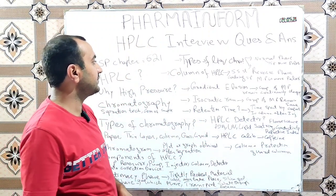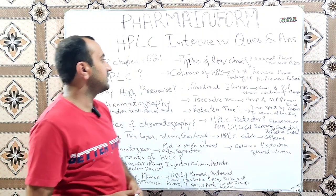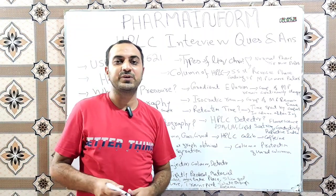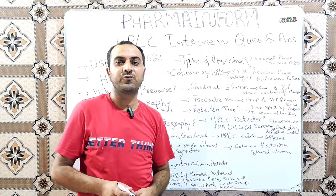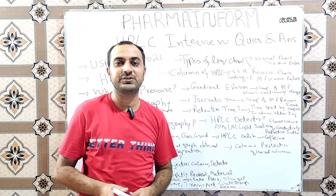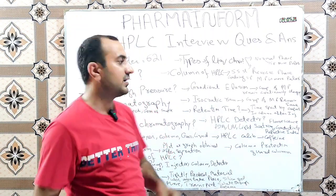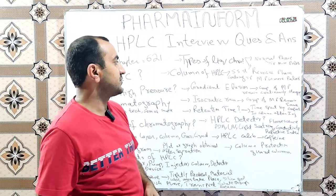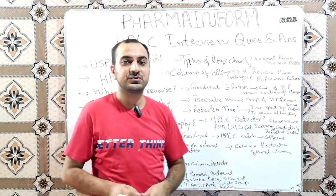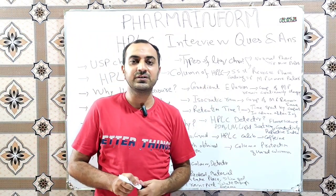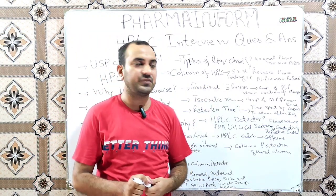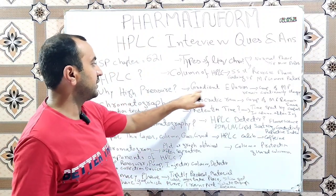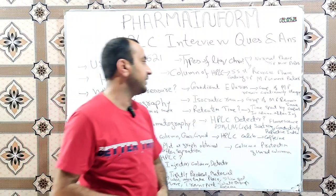The next question is: what is the column of HPLC? The column of HPLC is basically a stainless steel structure which contains the stationary phase.